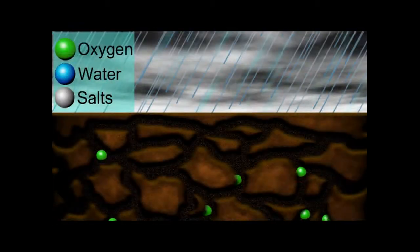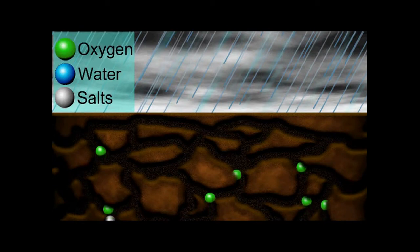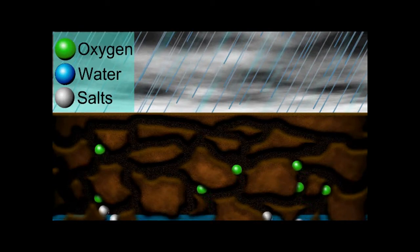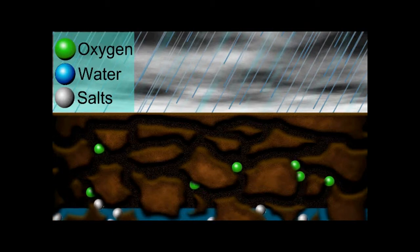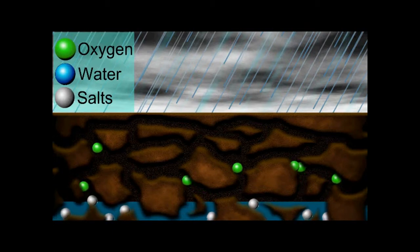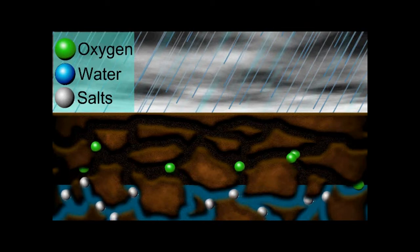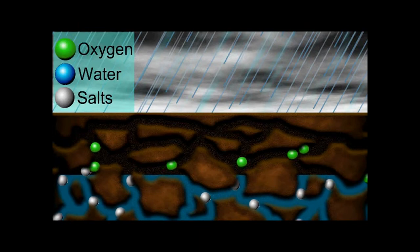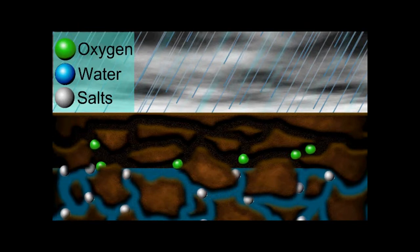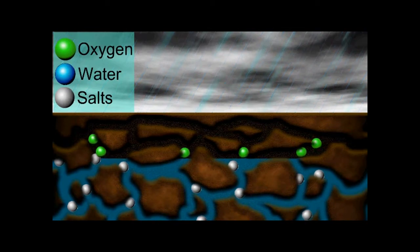Soil water table depth is affected by rainfall patterns. Under wet conditions, a very shallow water table depth depletes the oxygen within the root zone for both plant roots and soil microorganisms. A shallow water table also brings excessive salts and sodium to the soil surface, thus increasing the severity and acreage of saline or saline-sodic conditions.